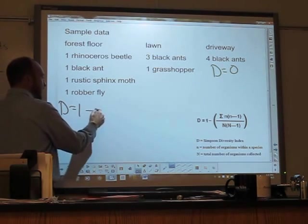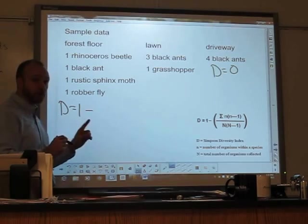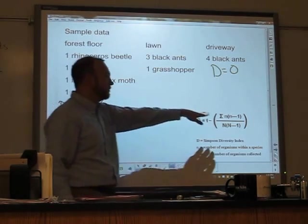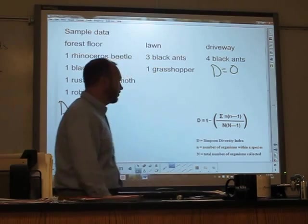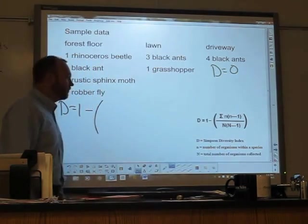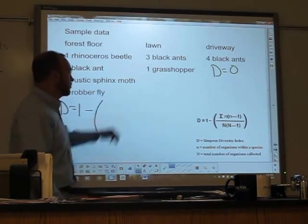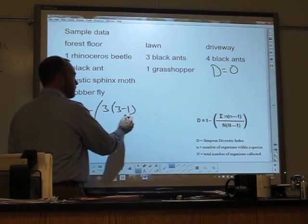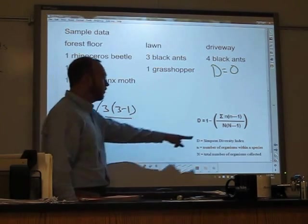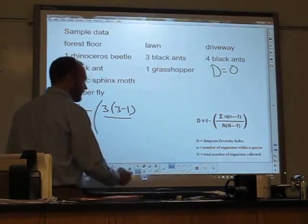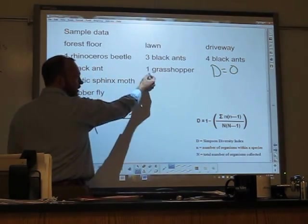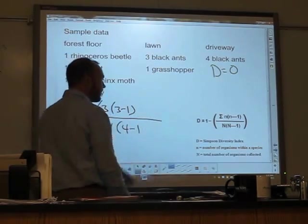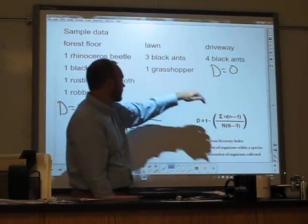It's one minus this time I will have to do a sum. Minus the sum of n times n minus one over N times N minus one. So little n is the number of organisms in a species. So here I have three black ants, so three times three minus one, over the total number of insects collected is four times four minus one. But the sum,